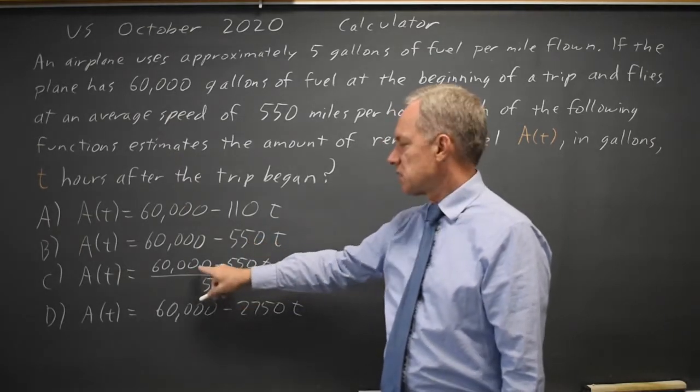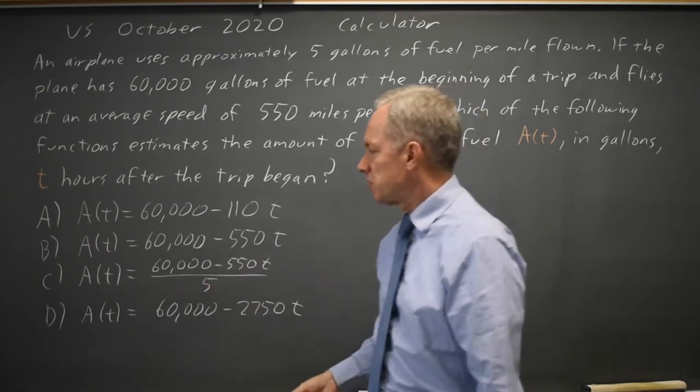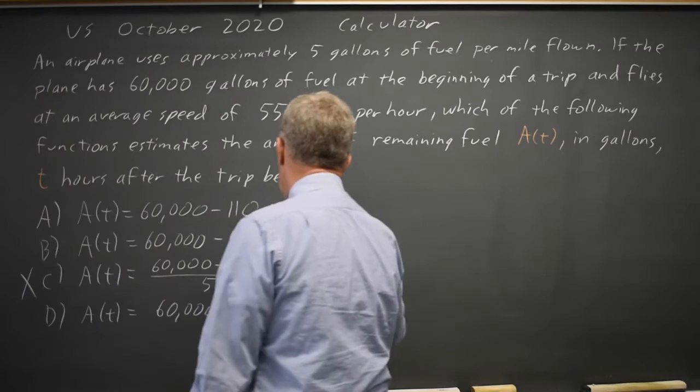But choice C, 60,000 minus 0 is 60,000. Then we divide that by 5 to get only 12,000. So choice C is not the correct answer.